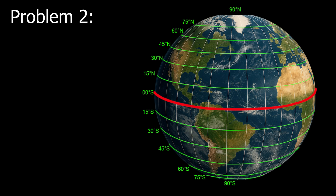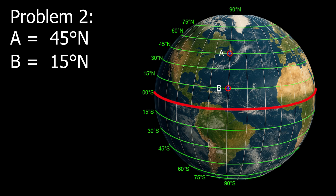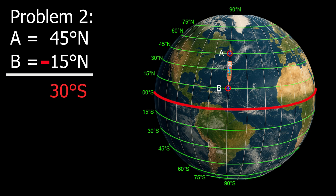Example number 2: Point A, 45 degrees north. Point B, 15 degrees north. The difference is 30 degrees. Since the vessel is moving south, the direction is south. Therefore, the D-lat is 30 degrees south.